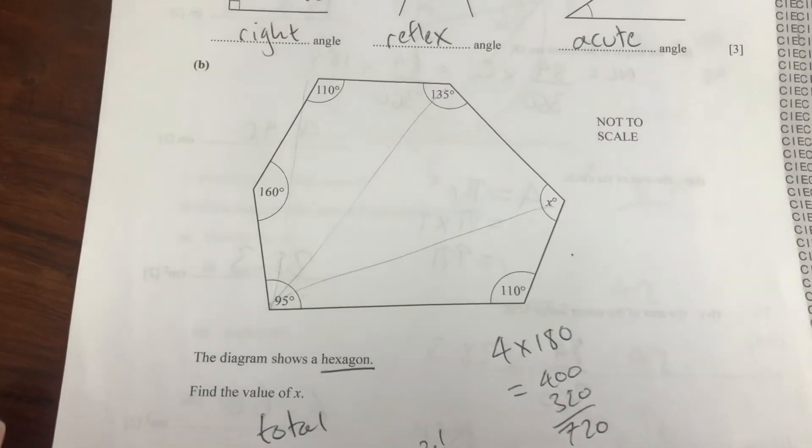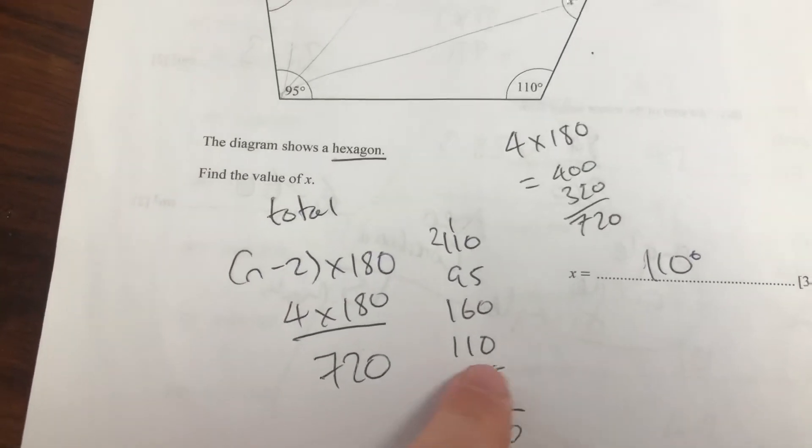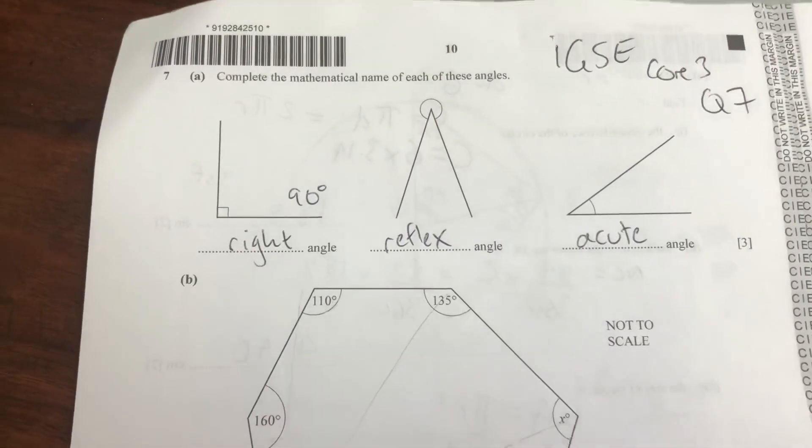So that's angles in an irregular hexagon. We have to find the total and then subtract the ones that we know. Thanks for watching, don't forget to like, subscribe, and share.